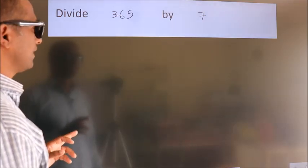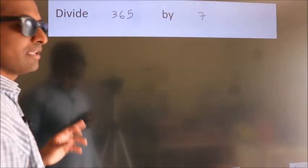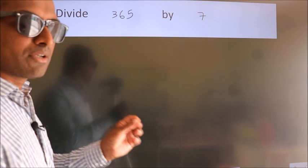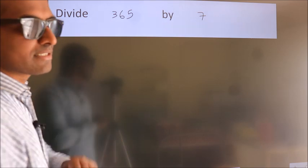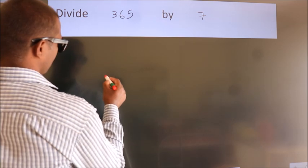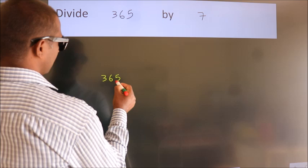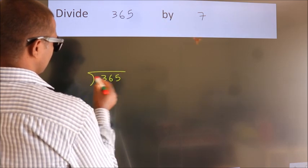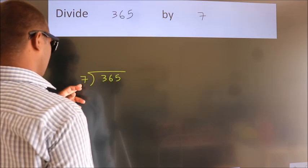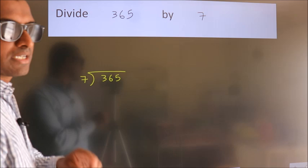Divide 365 by 7. To do this division, we should frame it in this way: 365 here, 7 here. This is your step 1.